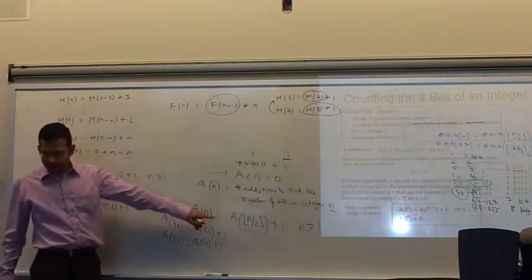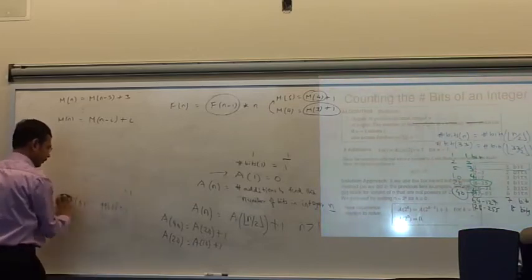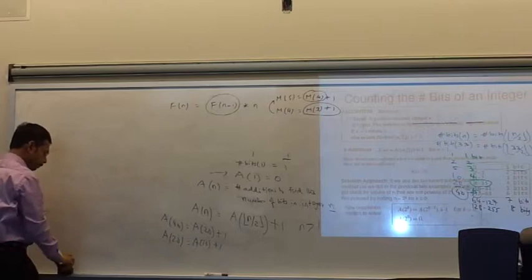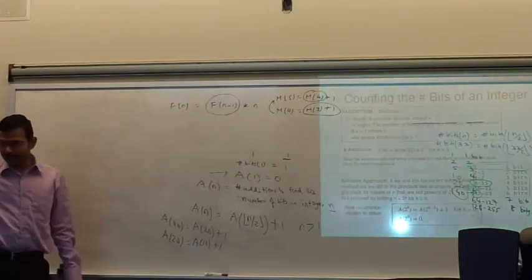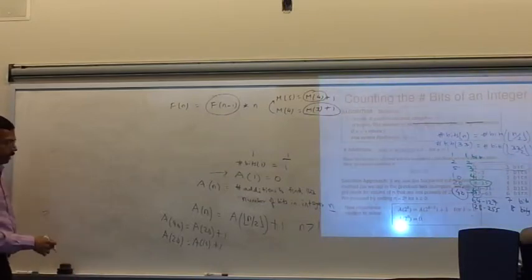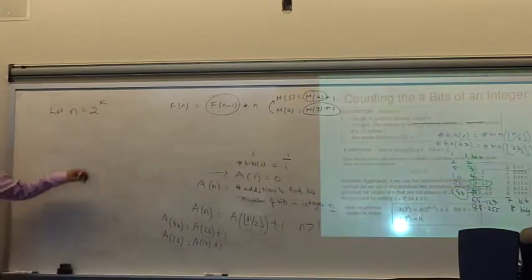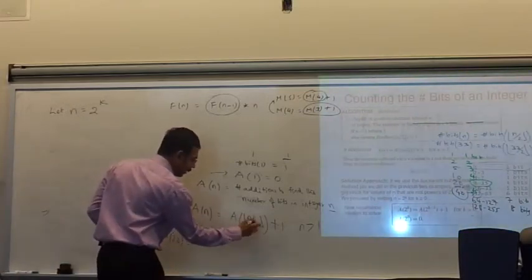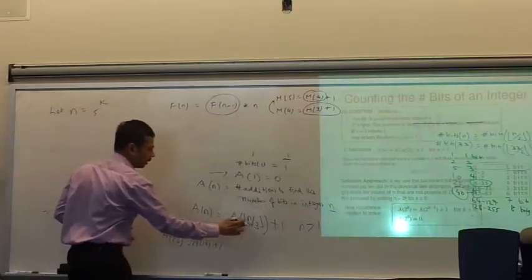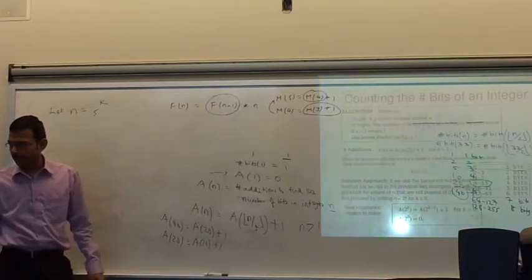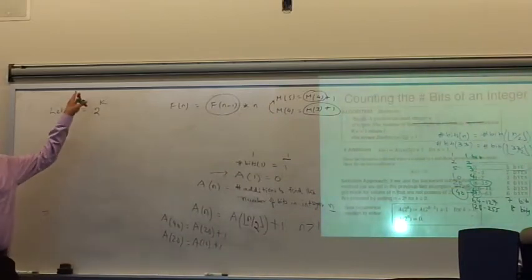To solve this kind of recurrence relationship where you have n over 2 or n over 3, you do a substitution: let n equal 2 to the power k. Why 2? Because we have a 2 in the denominator. If we had a 3 there, we'd choose n equals 3 to the k. If we have a 5, we say 5 to the k — it depends on what divisor is there. Since there is a 2 here, we say n equals 2 to the k.